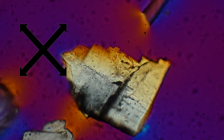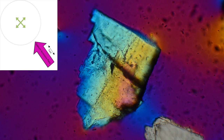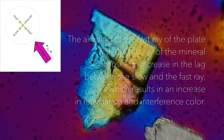Let's look at each position separately. In this position we go from first-order interference colors in cross-polarized light to second-order interference colors with the insertion of the plate. This increase in interference color is due to the fast ray of our mineral aligning with the fast ray of the gypsum accessory plate. The aligning of the fast ray of the plate with the fast ray of the mineral causes an increase in the lag between the slow and the fast ray, which results in an increase in retardation and interference color.